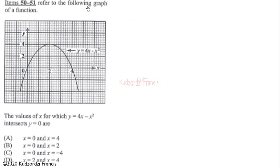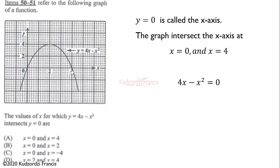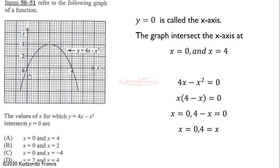Question 50: for the graph of y = 4x − x², find the values of x where y = 0 — that is, where the curve intersects the x-axis. From the graph, the intersections are at x = 0 and x = 4. You could also solve 4x − x² = 0 algebraically, but reading directly from the graph is faster.